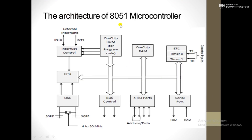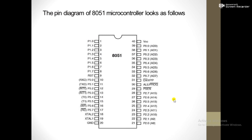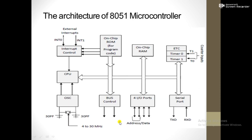The architecture of the 8051 microcontroller includes: interrupt control, on-chip ROM, on-chip RAM, timer, counter input, serial port, 4 input/output ports, bus control, oscillator, and CPU.